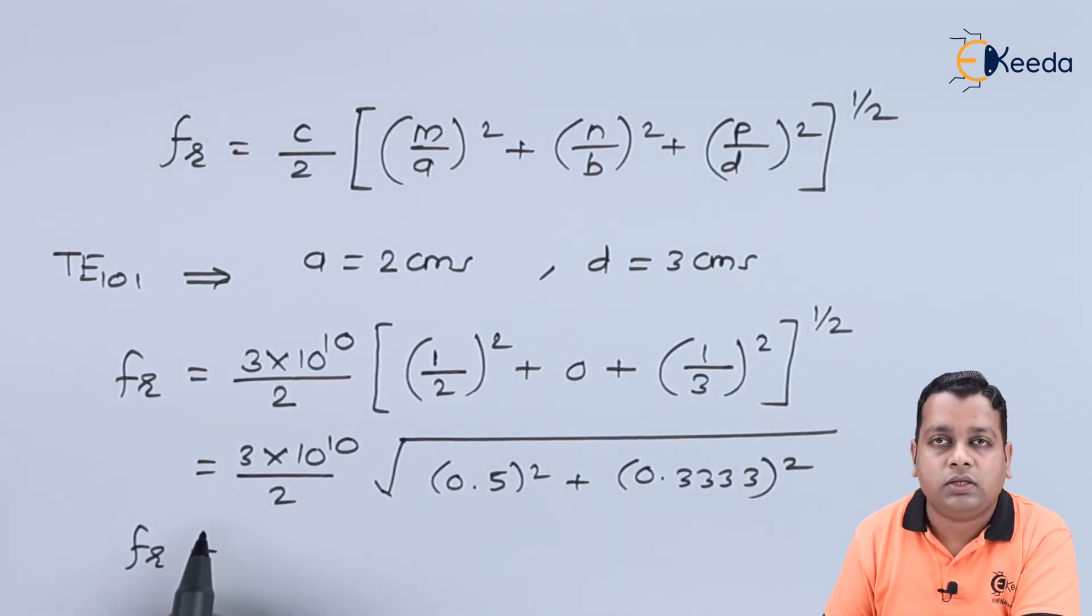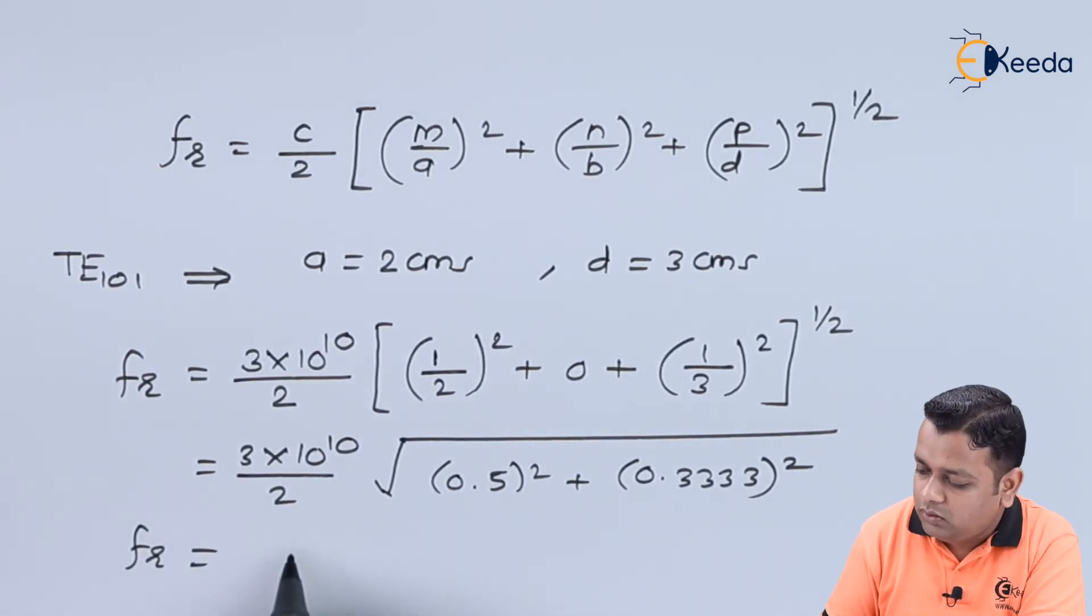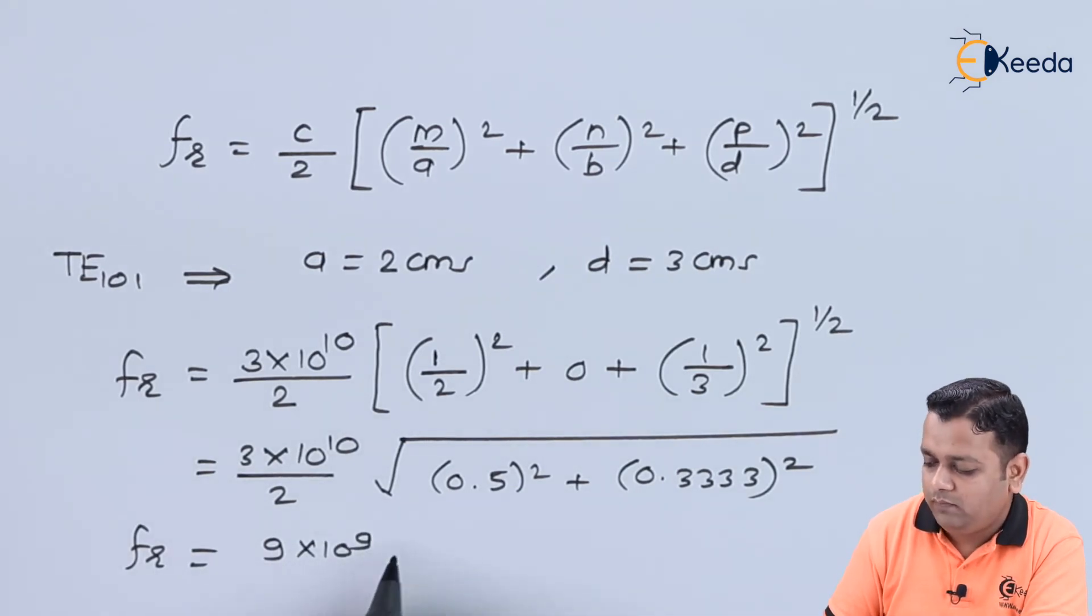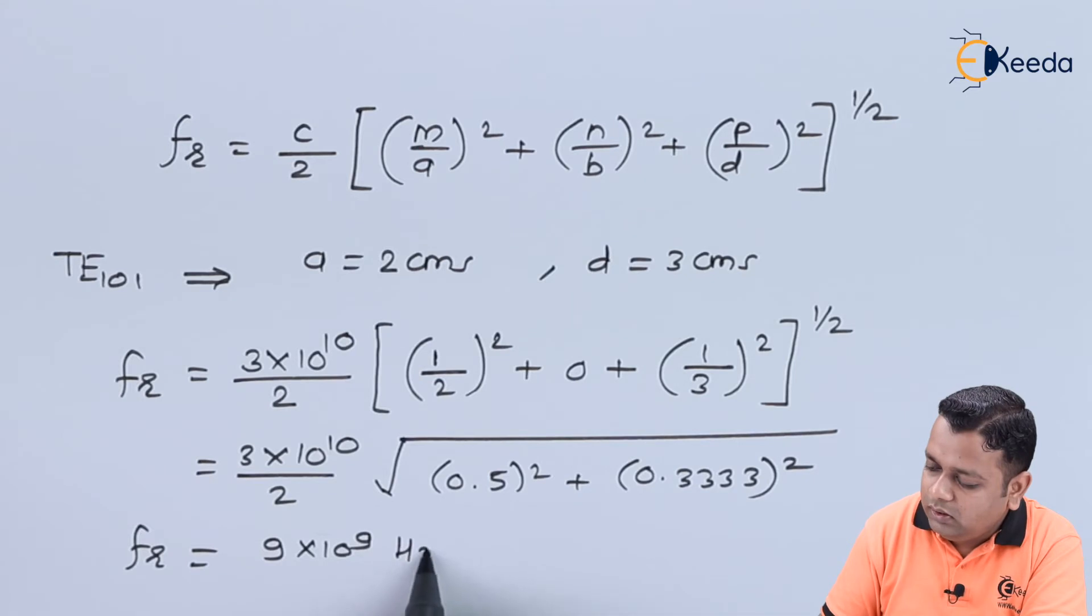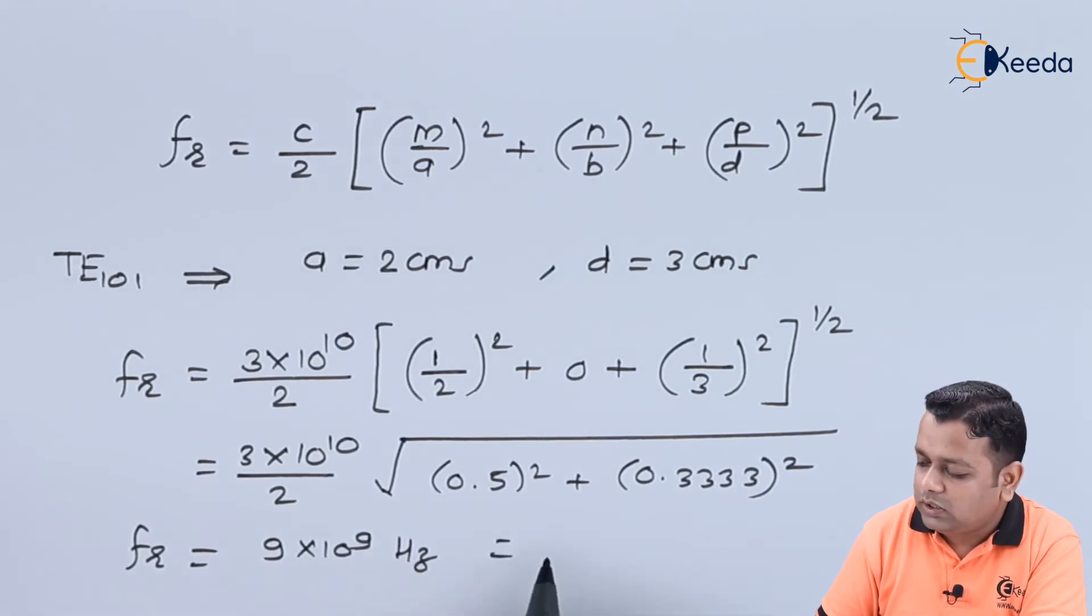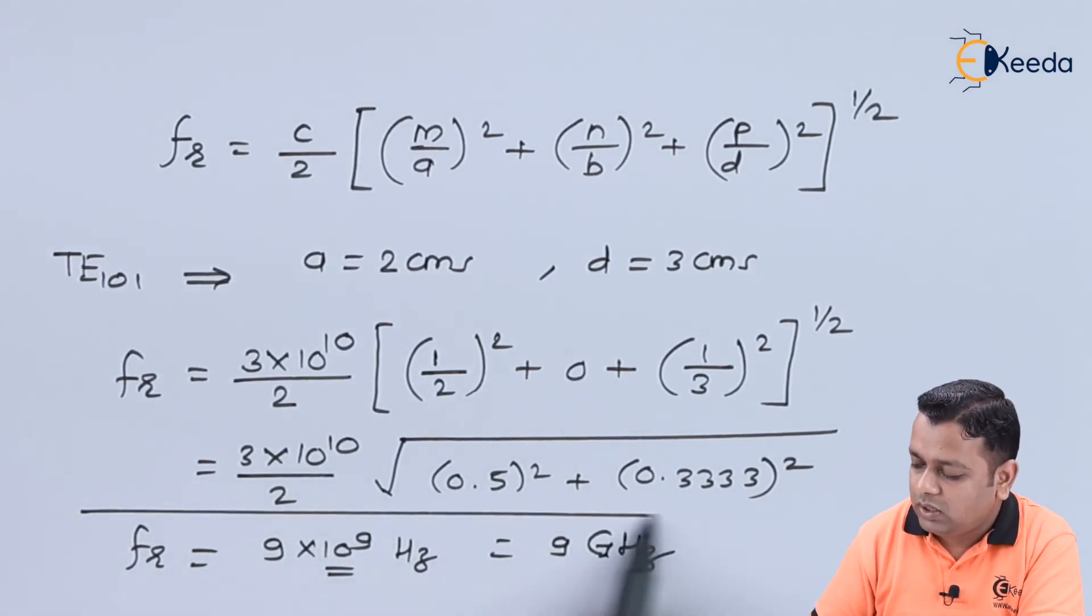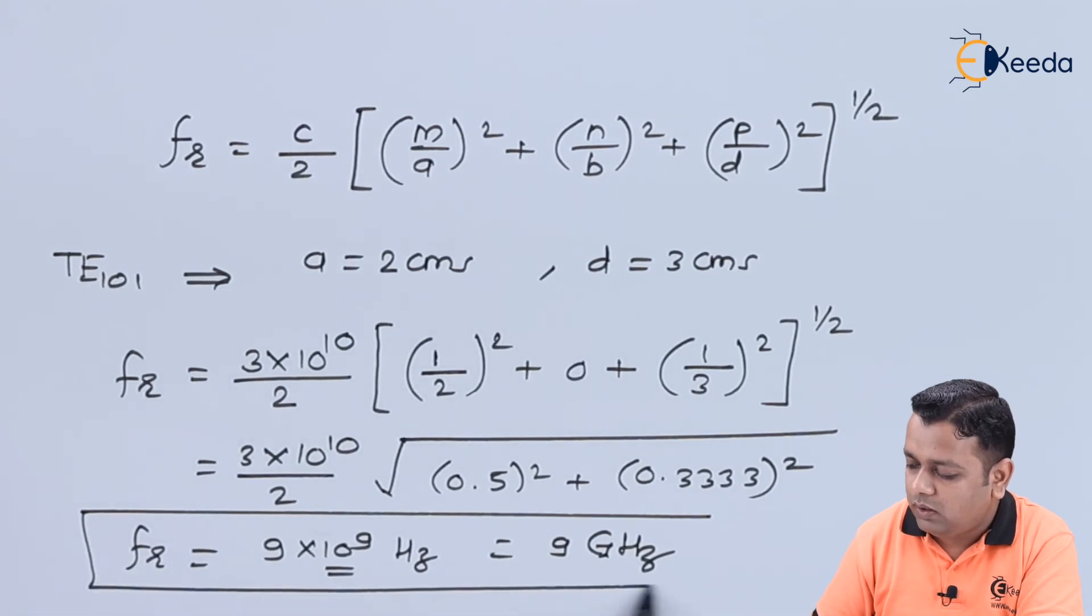This computation results in the value of resonant frequency equal to 9 times 10 raised to power 9. The frequency is in terms of hertz, which we can express as 9 gigahertz, where giga is 10 raised to power 9.